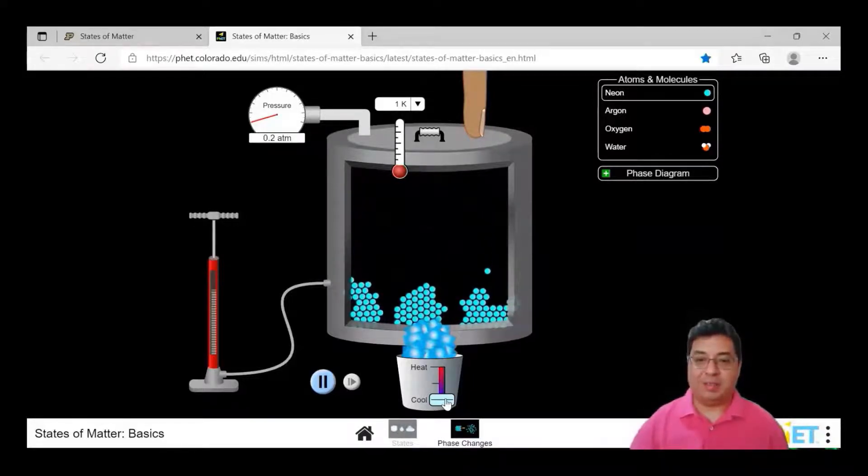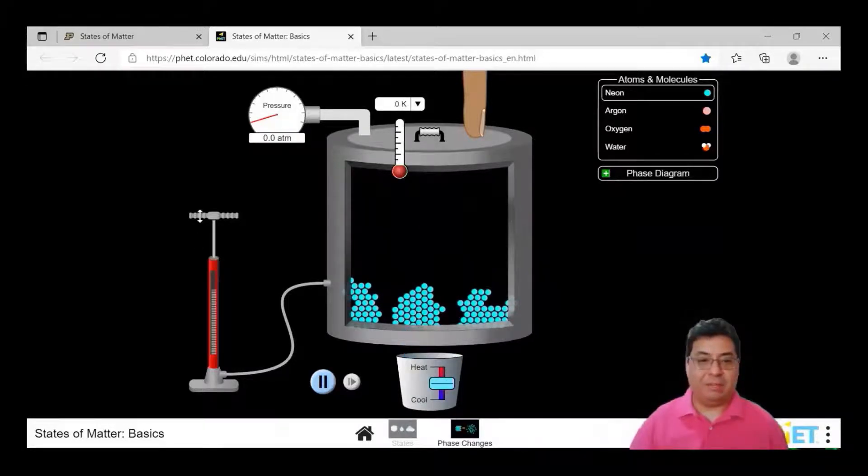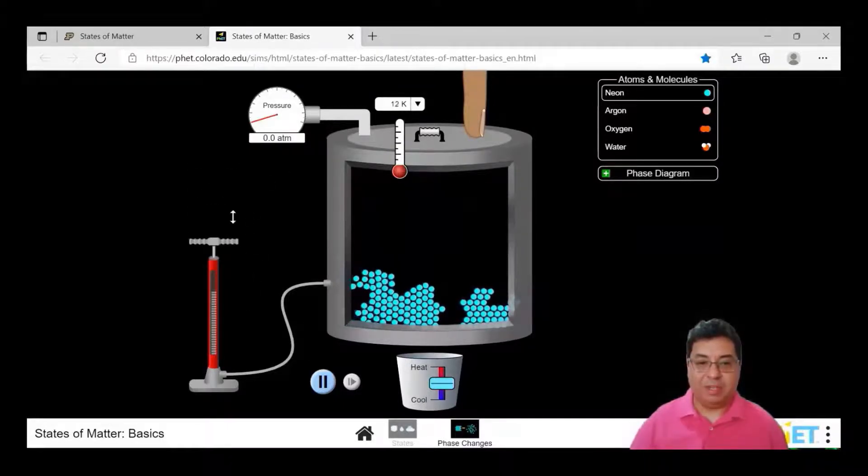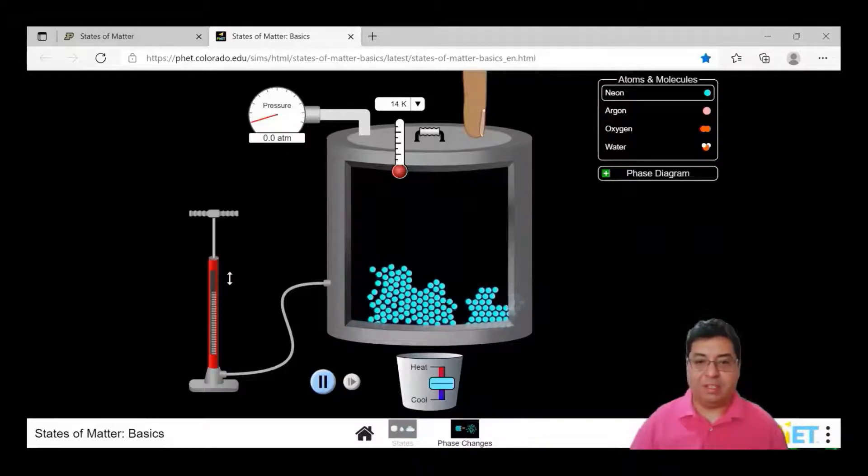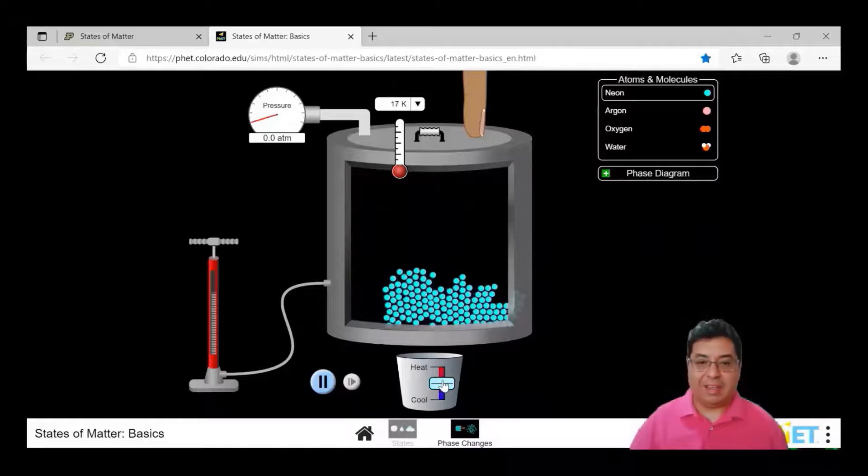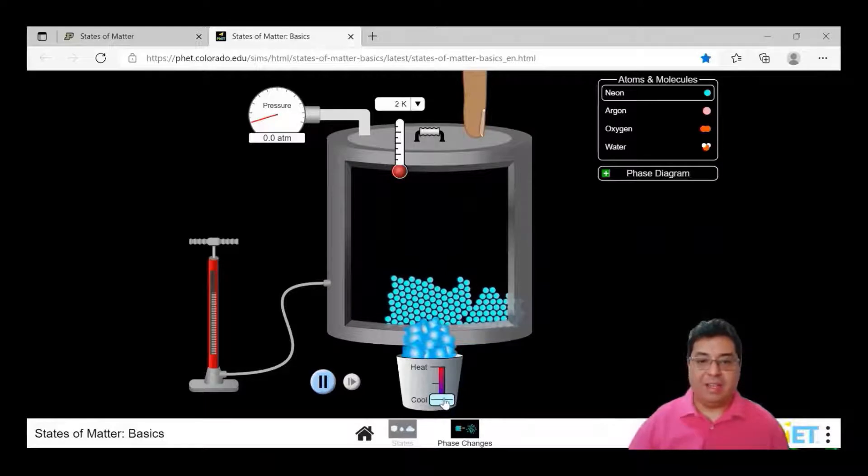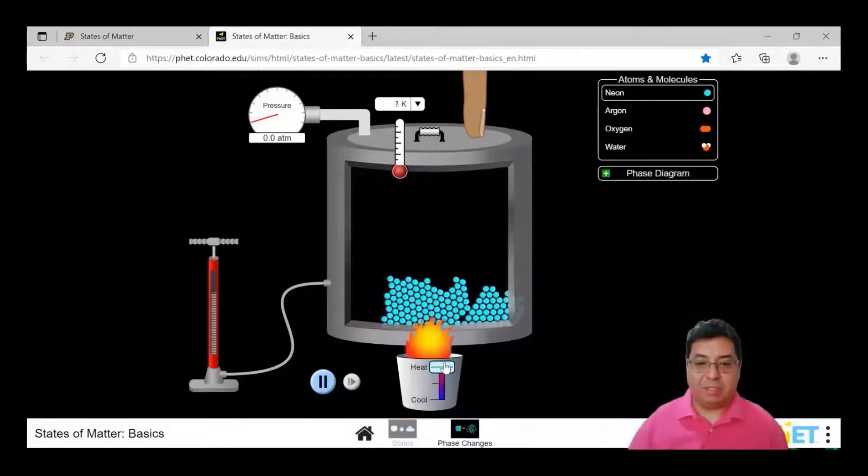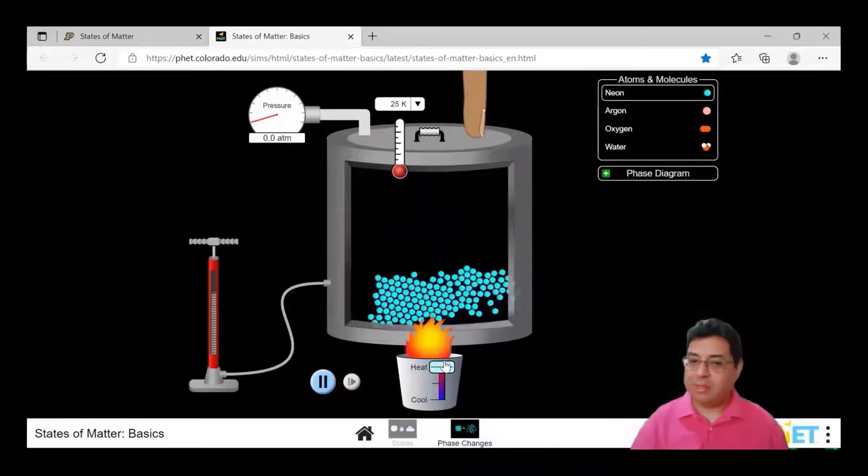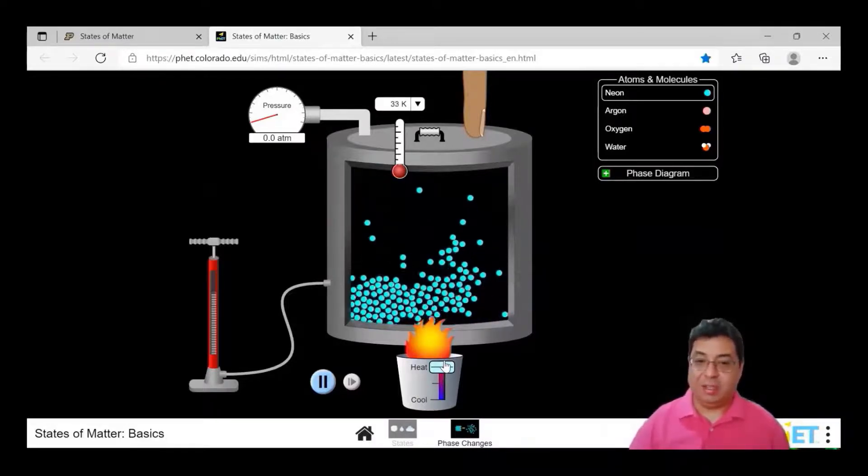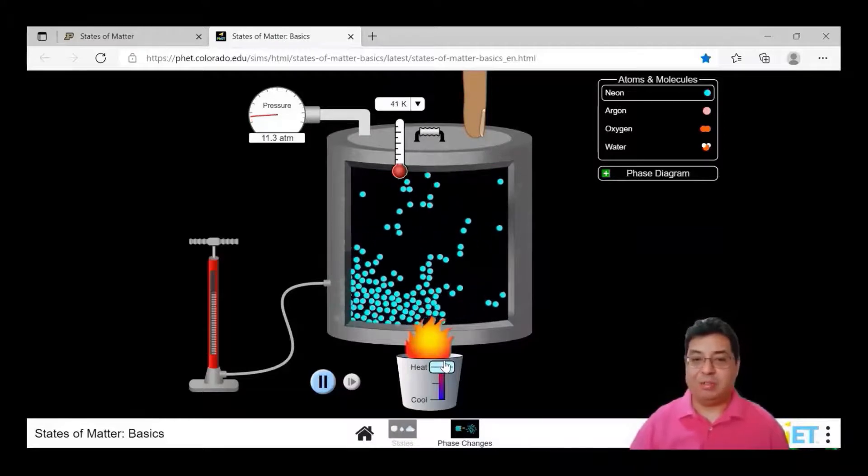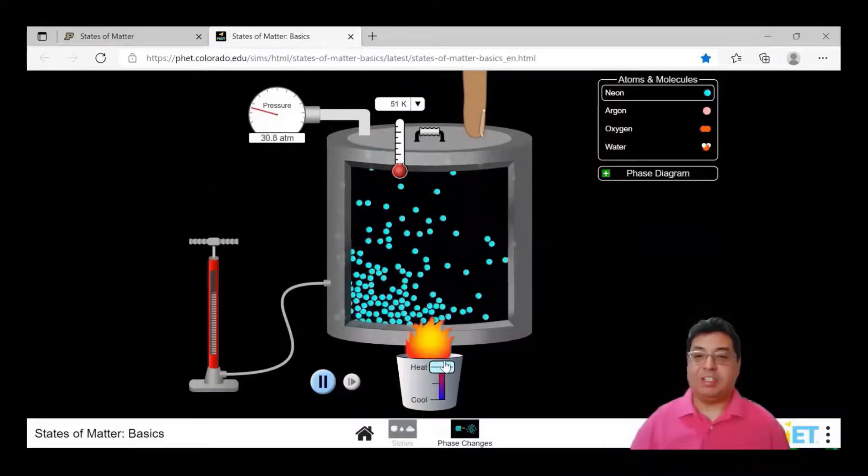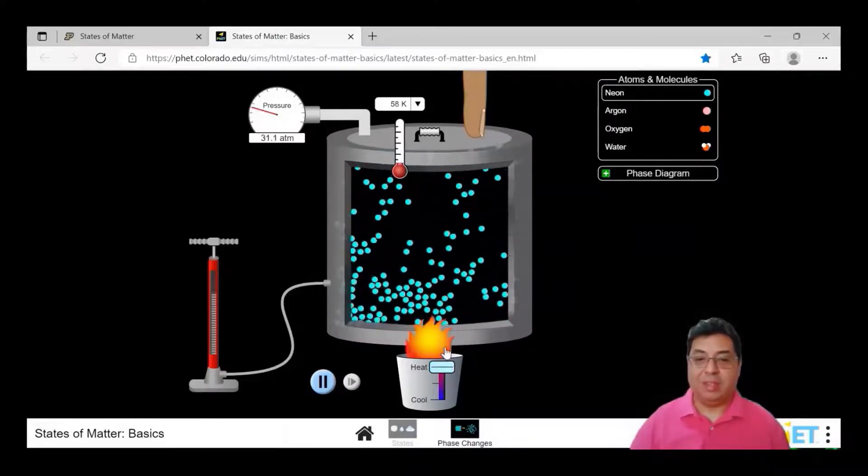This is why I like this website because you can do this experiment online. The pump here you can use and you can put more. Now you can see there are more coming because they're moving and I'm pumping in more molecules here, neon molecules. They continue to get compact. Now if you want to heat them up, you just move this up. Now here's the fire and boom, you can see they're starting to loosen up and move around more just like what I had shown you earlier.